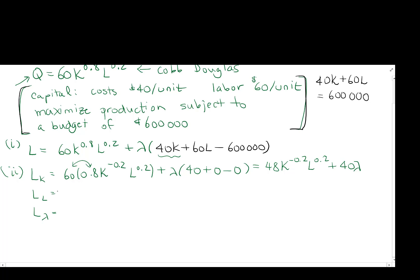And LL is going to be 60 times 0.2K to the 0.8L to the 0.2 minus 1 gives negative 0.8, plus lambda times 0 plus 60 minus 0 gives 60 times 0.2 is 12K to the 0.8L to the negative 0.8 plus 60 lambda.